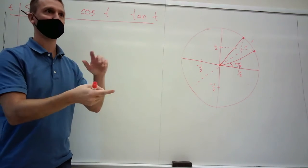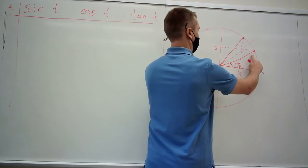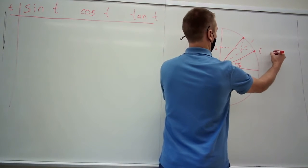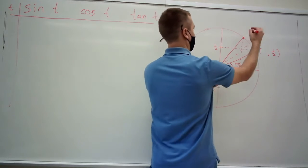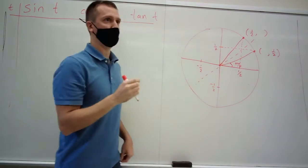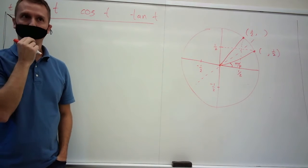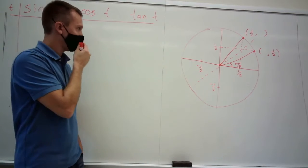Because of what we talked about last time and reflections about the line y equals x, we just swap the x and y coordinates when we reflect about that line. So if I take a π/6 angle which has a y-coordinate of 1/2, and I reflect it across this line, I arrive at a point which has x-coordinate 1/2.